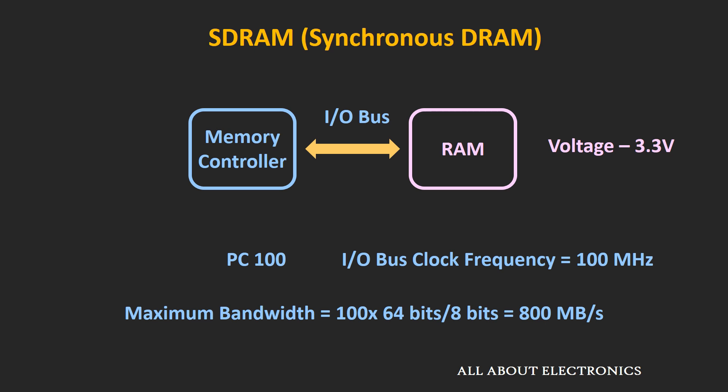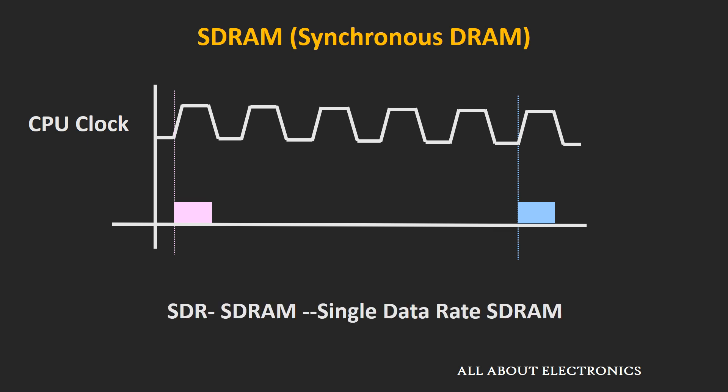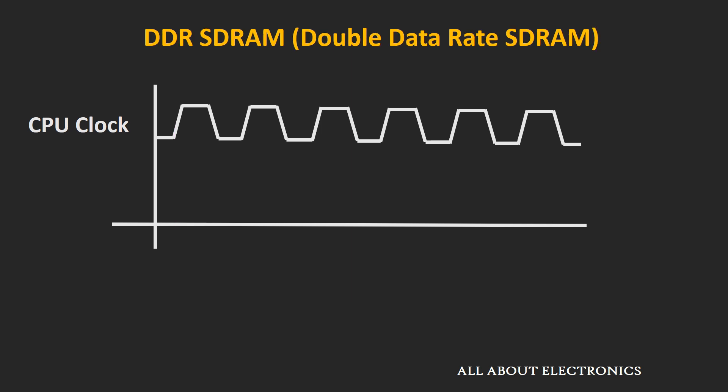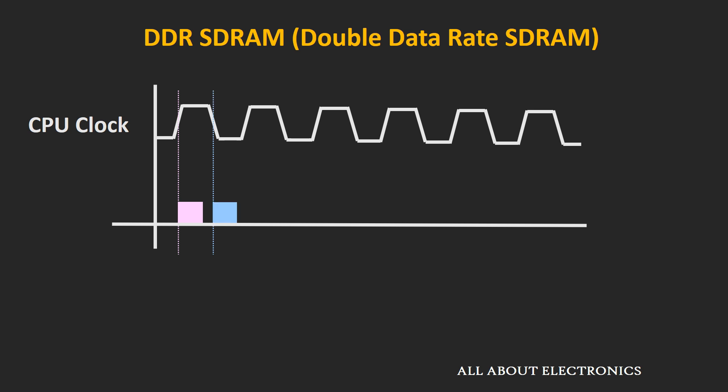Synchronous DRAM modules operate at 3.3V. SDRAM is also known as single data rate SDRAM because data is transferred only at every rising edge of the clock cycle. The next generation, DDR RAM, transfers data twice during the clock cycle — during both the positive edge and the negative edge — hence it is known as double data rate or DDR-SDRAM.